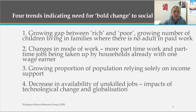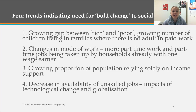There are four trends indicating a need for bold change in social support systems, outlined by the Workplace Reform Reference Group in 2000. They identified a growing gap between the rich and the poor, a growing number of children living in families where there is no adult in paid work, changes in the mode of work with more part-time jobs being taken up by households already with one wage earner, a growing proportion of the population relying solely on income support, and a decrease in the availability of unskilled jobs due to technological change and globalisation. This report was 17 years ago — do you think these trends are still continuing, or have they changed?